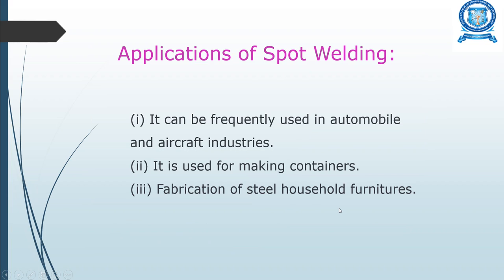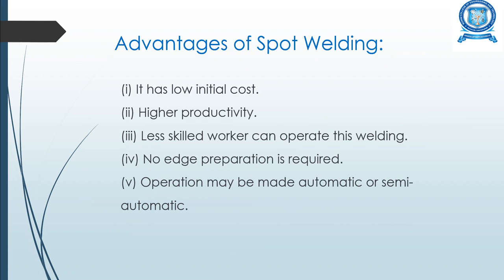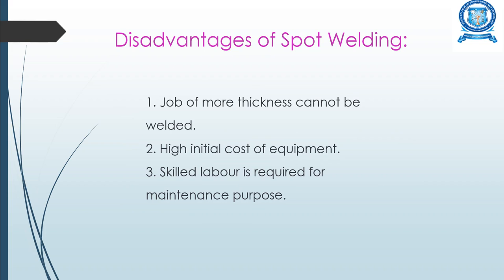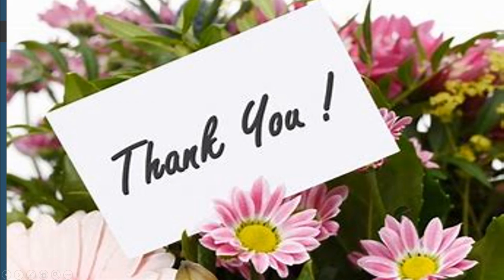Applications of spot welding include use in automobile and aircraft industries, making containers, and fabricating steel household furniture. Advantages include low initial cost, high productivity, and operation by less skilled workers. No edge preparation of the metals is required, and the operation can be automatic or semi-automatic. Disadvantages include the inability to weld thicker materials, high equipment cost, and the need for skilled labor for maintenance.